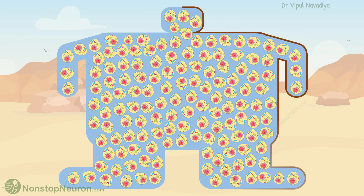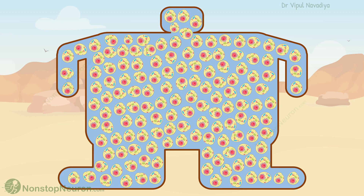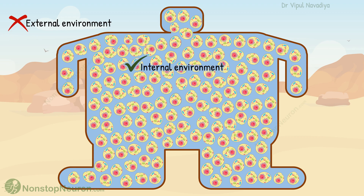First of all, the cells built a home made up of skin, separating themselves from the external environment. The environment inside this home is called the internal environment of the body. Now the cells do not have to worry much about the external environment — they just need a comfortable internal environment, and all the cells in the body contribute to this.